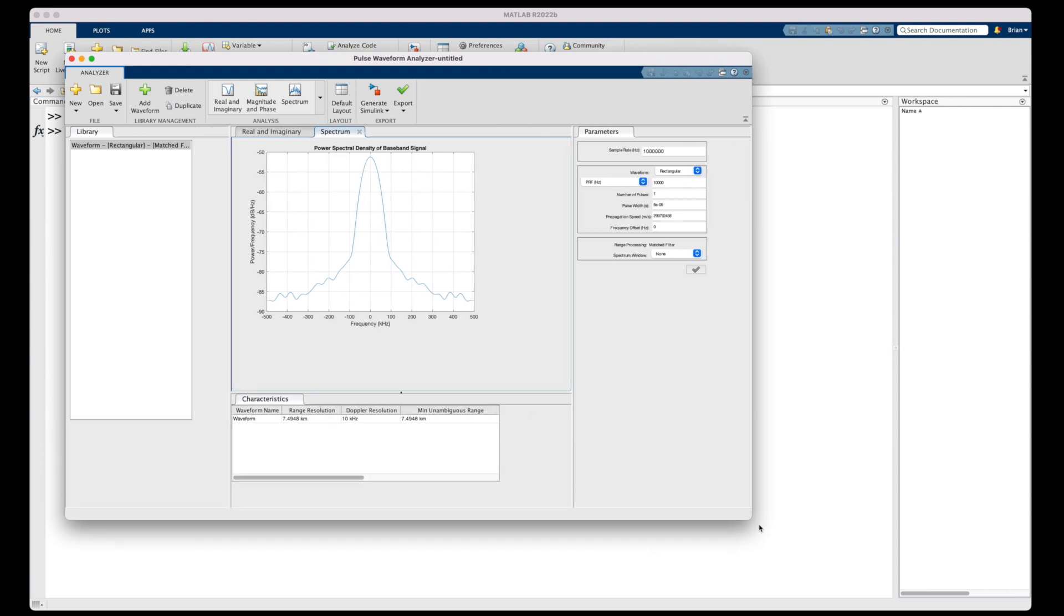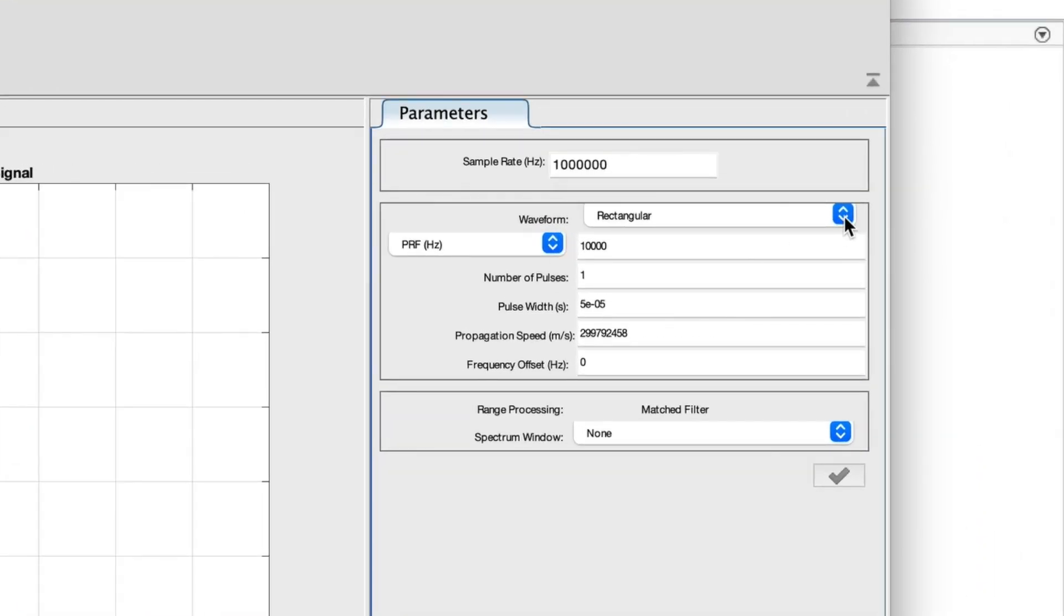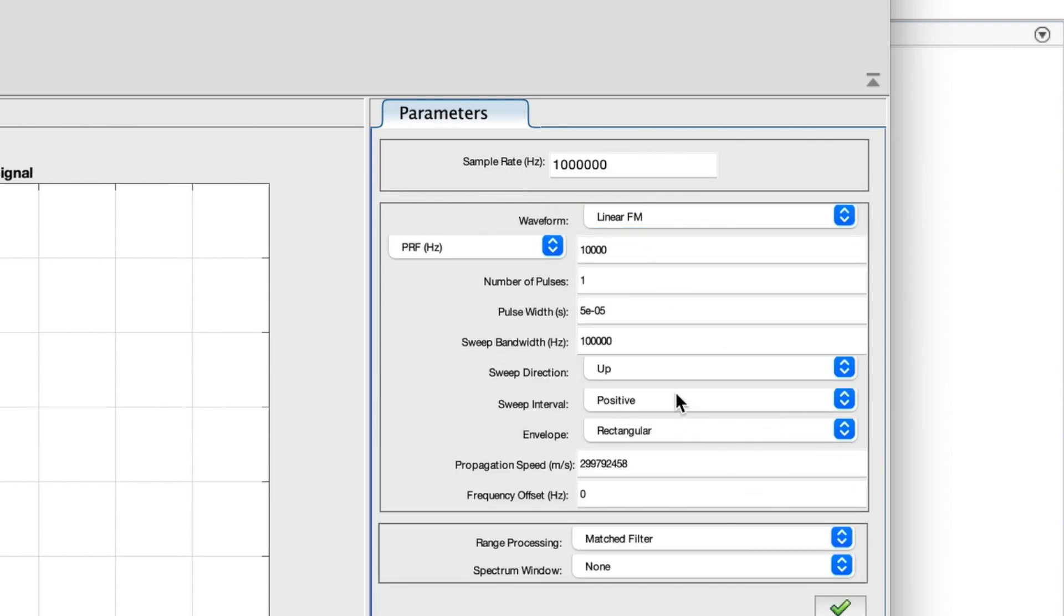So as the name implies, with this app, you can analyze different pulse waveforms. And under the parameter section over here, I'm going to change the waveform to linear frequency modulated. And you can see all of these other parameters that you can adjust, including how to do range processing. But I'm going to leave it as matched filter just to stay consistent with what we talked about in the video.